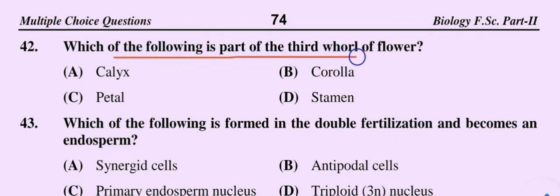Question number 42: Which of the following is part of the third whorl of a flower? Option A calyx, option B corolla, option C petal, option D stamen. The correct option is option D: stamen.